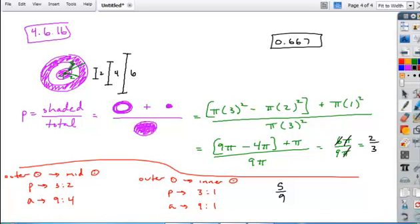But we're not just counting that. We're also counting the inner circle. The inner circle is 1/9 of the whole thing, so we're adding back 1/9. What's 5/9 plus 1/9? 6/9, which reduces to 2/3.